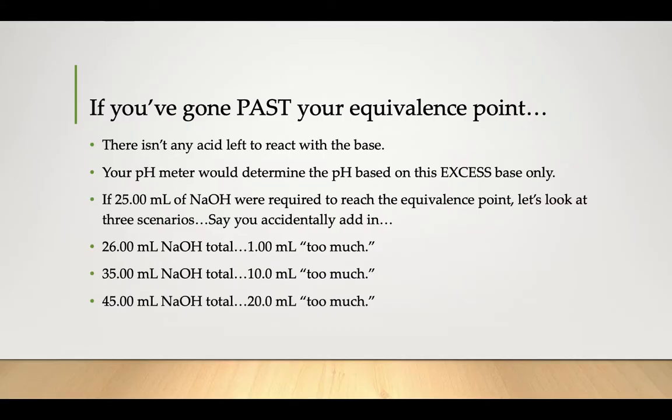What we're going to be looking at on these last few slides is if you were titrating and you went past that equivalence point. So you went past the light pink and went into the super dark magenta, bright pink color. What's going on there and how does that correlate to the graph you've seen on the last few slides?